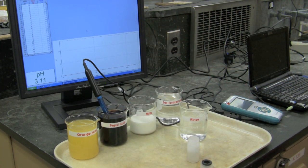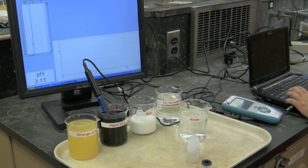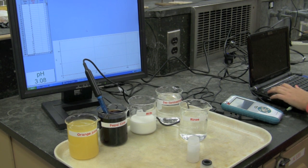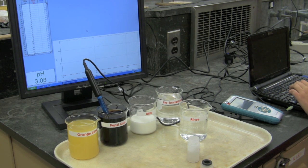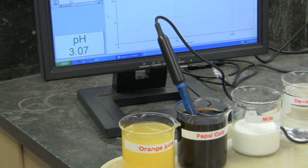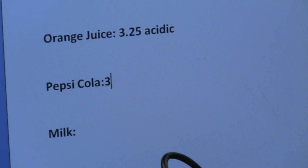She will record the pH again in a Word document and state whether or not the solution is acidic or basic. pH equals 3.08, pH equals 3.06, pH equals 3.05.